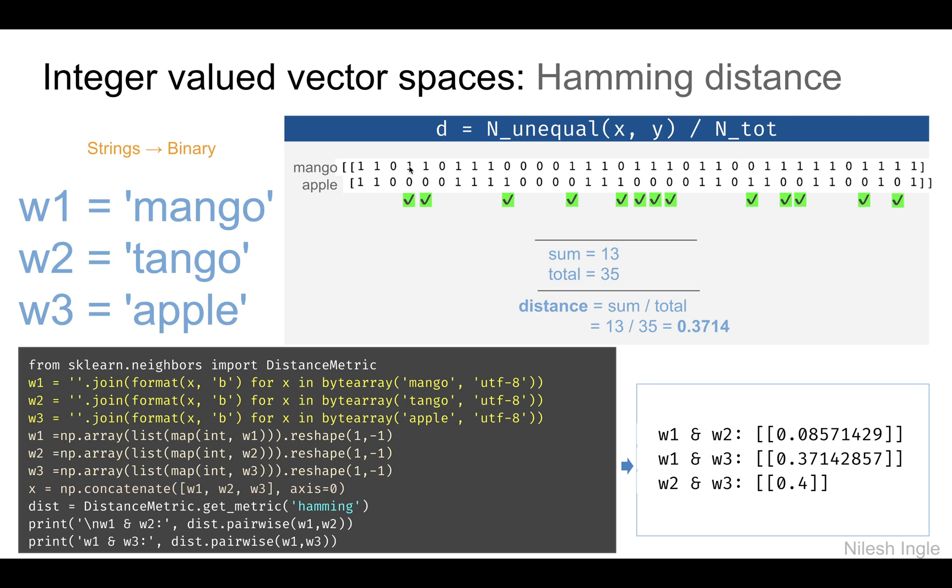With these tick marks we have 13 of them, and the total number of columns is still the same, so we have 0.374 as the final distance. We can see that the distance from mango to tango is 0.08 and from mango to apple is 0.37, so this could be used for finding similarity between words.